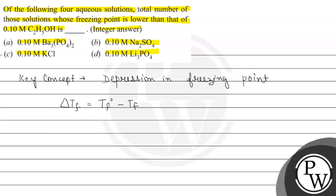Delta Tf is equal to i times Kf times M, where M represents molality, i is the van't Hoff factor, and Kf is a constant which we call the freezing point constant.